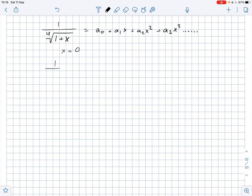Let's plug x equals 0. We get that 1 over fourth root of 1 plus 0 equals a0 plus 0 because the rest of the terms here will be 0 since x is 0. So we get that a0 equals 1.